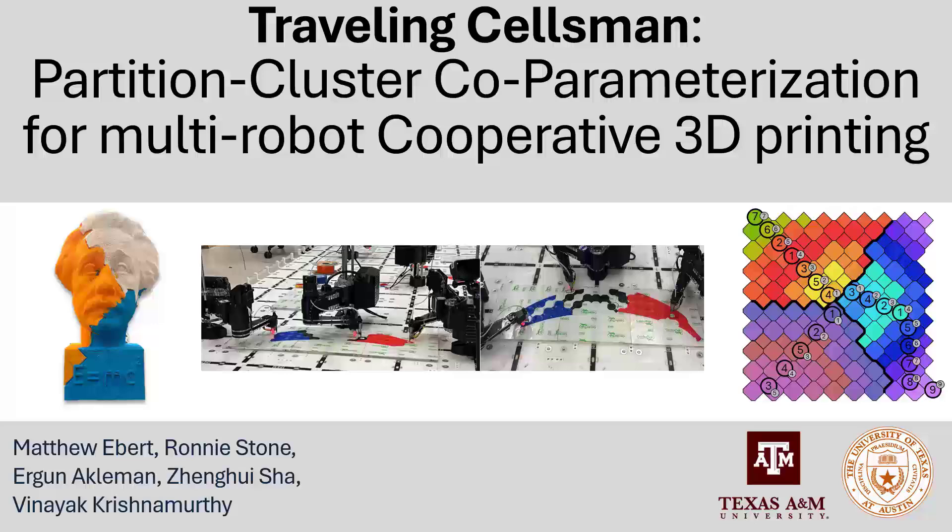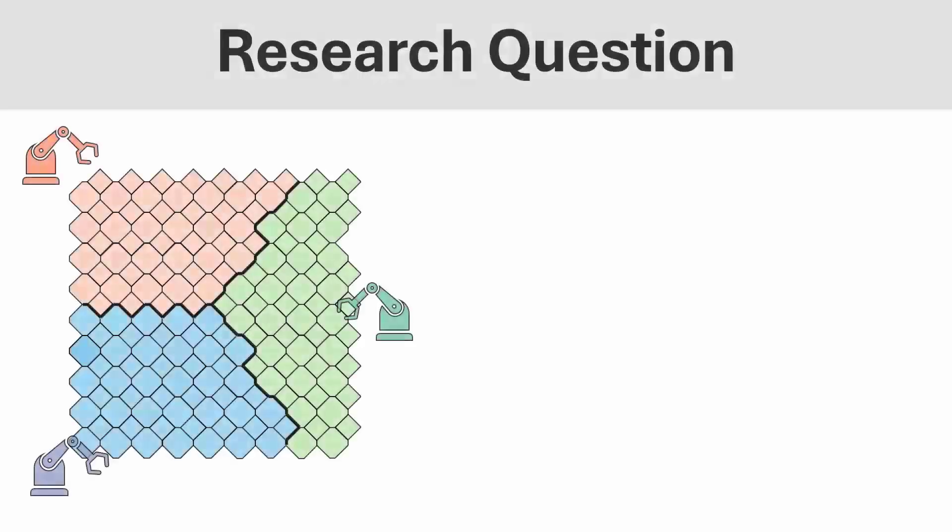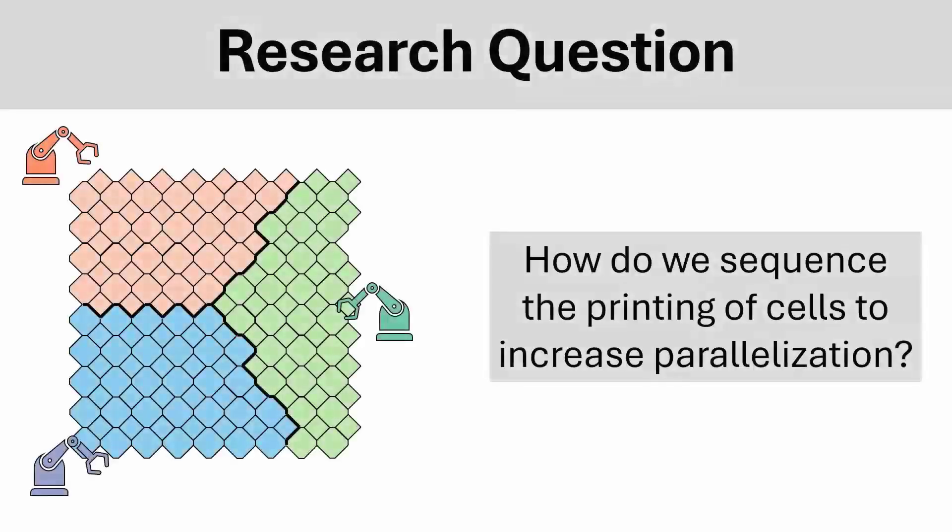This is our work titled Traveling Salesman Partition Cluster Co-Parameterization for Multi-Robot Cooperative 3D Printing. The research question we will be exploring is, how do we sequence the printing of cells to increase parallelization for multi-robot cooperative 3D printing?